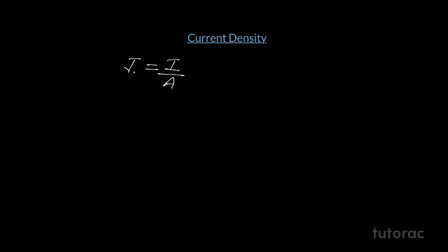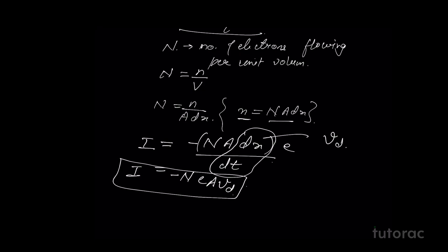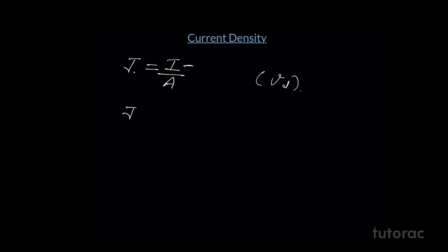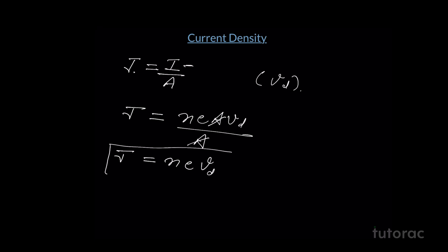Let's derive a relation between current density and drift velocity Vd. From the previous result, current I equals N·e·A·Vd. Substituting this into J equals I upon A, the area A cancels out, and we get current density J equals N·e·Vd. This means we can also calculate what drift velocity is required to produce a given amount of current density.